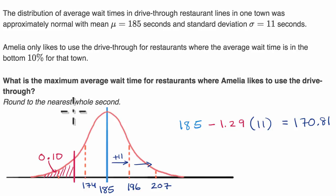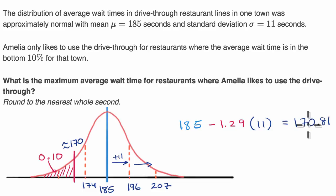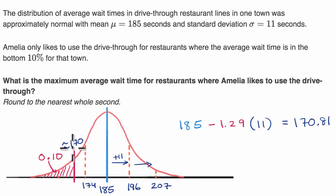They say to round to the nearest whole second. There are a couple of ways to think about it. If you really want to ensure you're not crossing the 10th percentile, you might round down to 170 seconds. Normal rounding would give 171, but that might just cross the threshold. In practice, for this drive-thru application, the difference of one second isn't mission critical — so either 170 or 171 seconds would meet Amelia's needs.